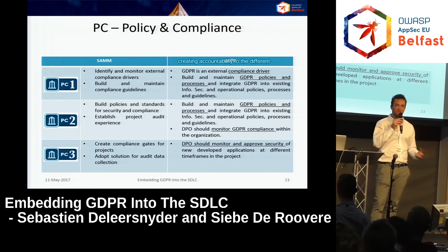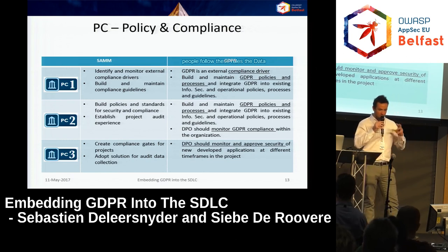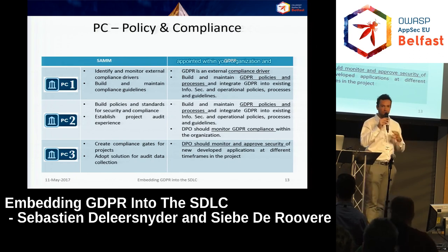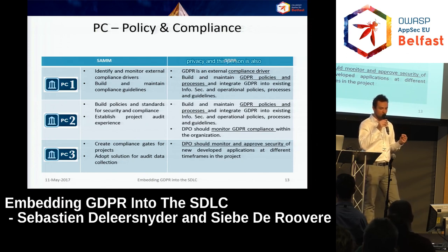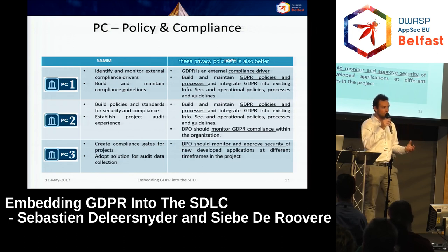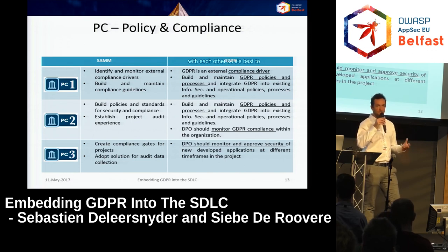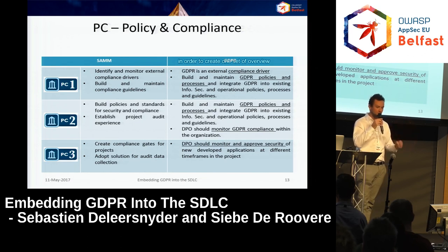It's about creating accountability to different roles, defining those roles within your organization, and making sure people follow them. The Data Protection Officer is a very important person who should be appointed within your organization — they hold final accountability for privacy and are responsible for monitoring GDPR compliance. This person has the right to go to operations and development teams and ask whether they're following privacy policies. It's best to embed privacy policies within existing operational policies to avoid conflicting sets of rules.